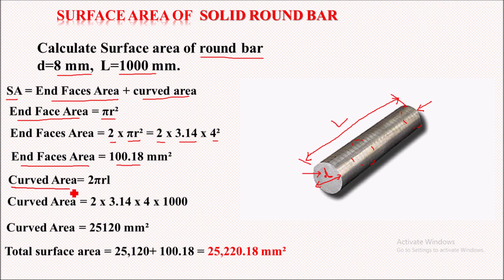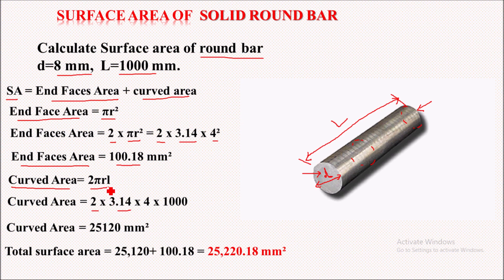Now the curved area. The curved area is the circumference of the circle multiplied by the length L. The circumference of the circle is 2πR. So curved area = 2 × 3.14 × 4 × L, where the total length L is 1000 mm. Solving this, the curved area equals 25,120 square mm.